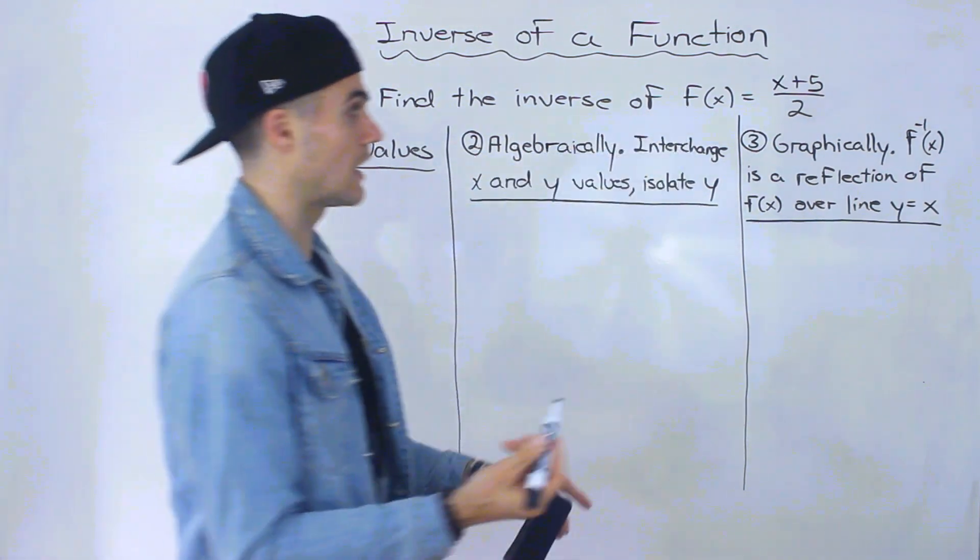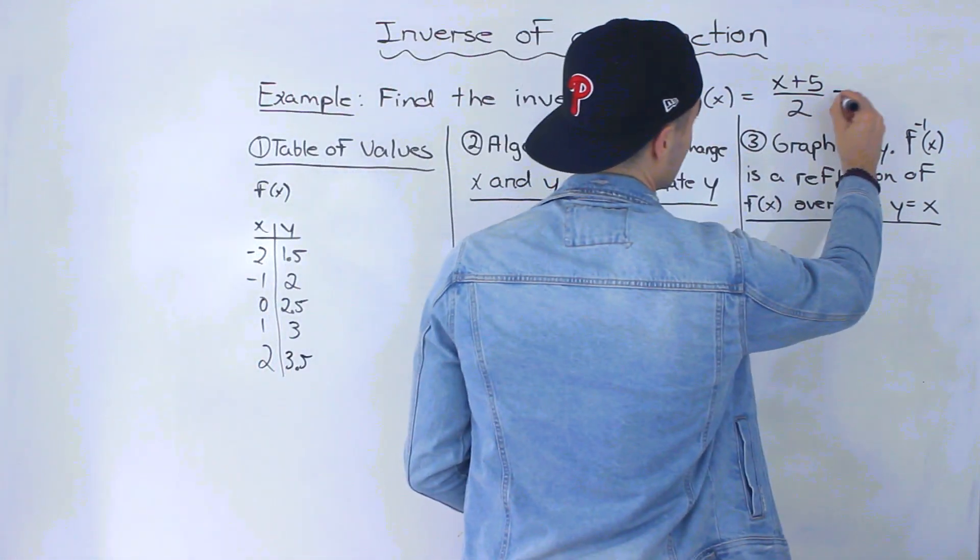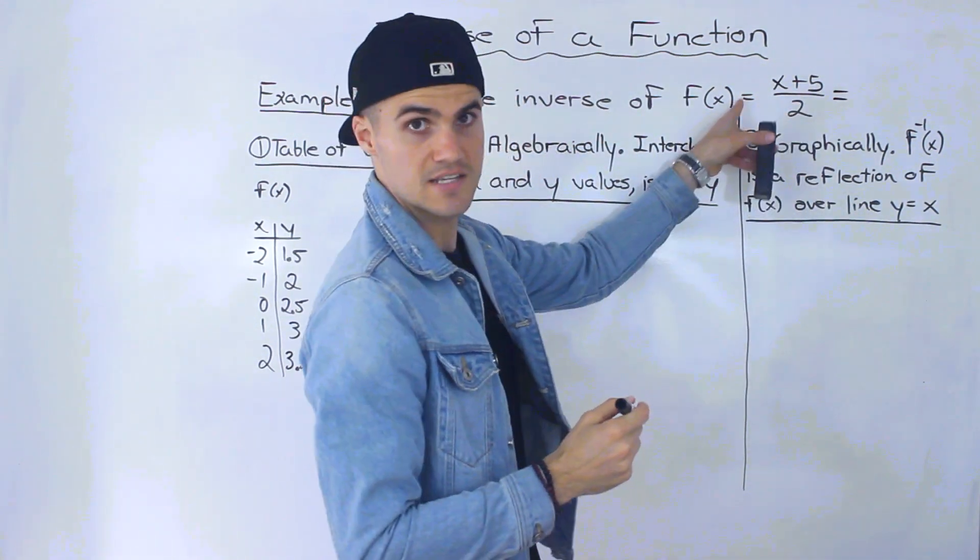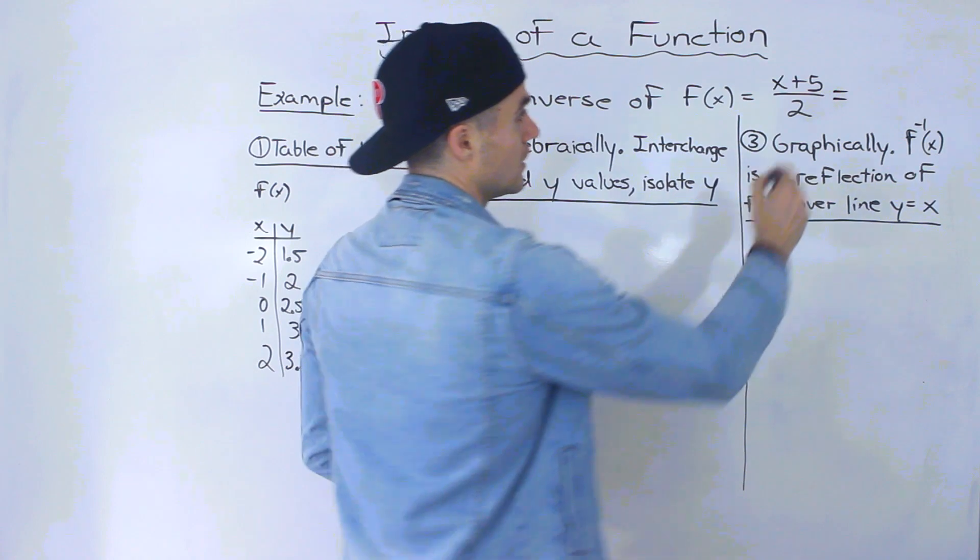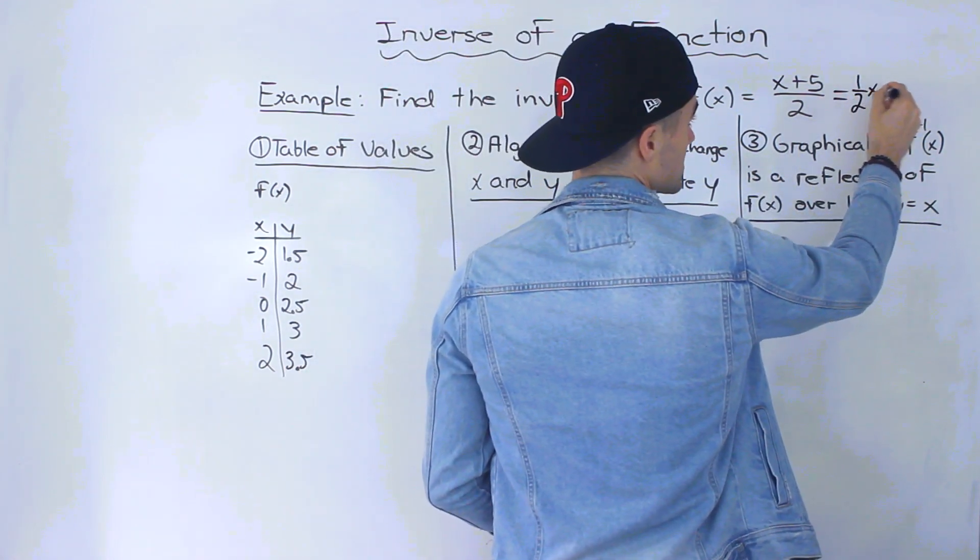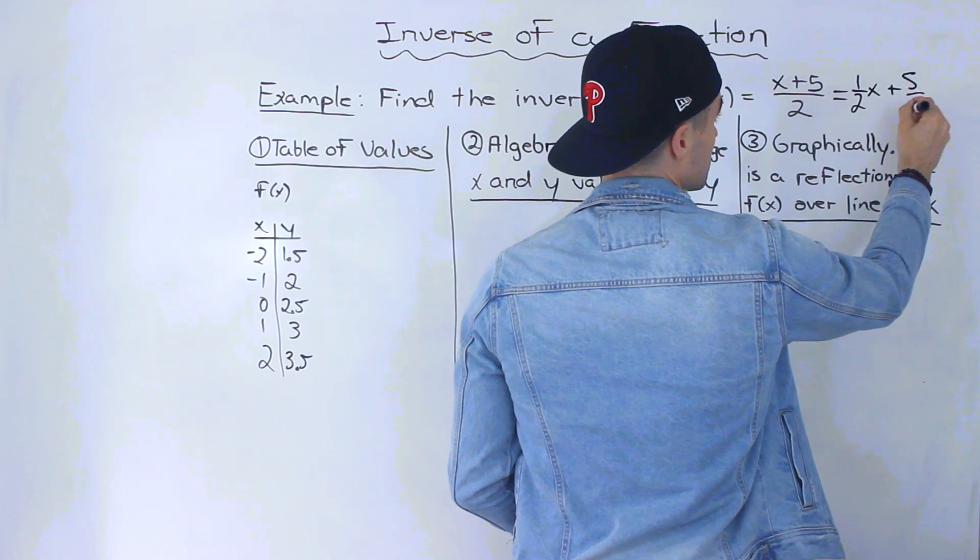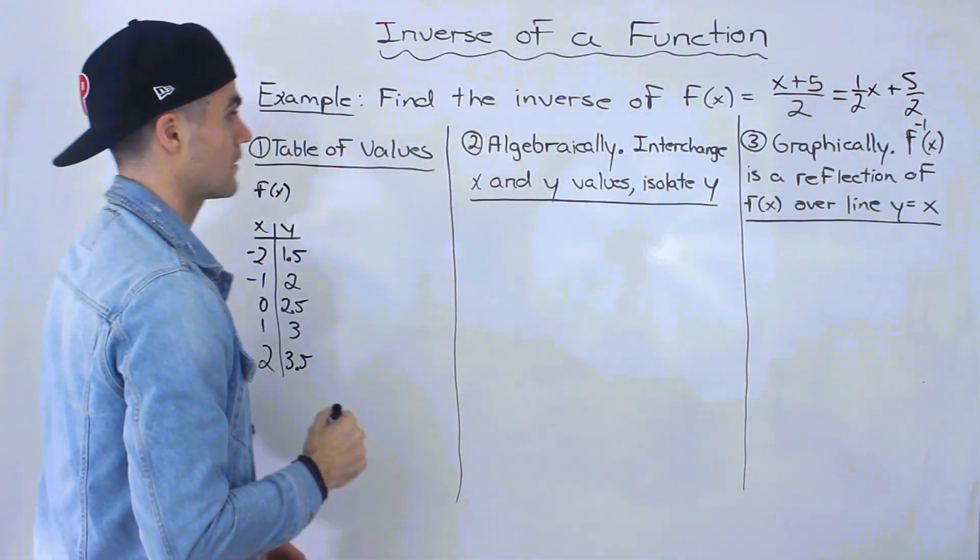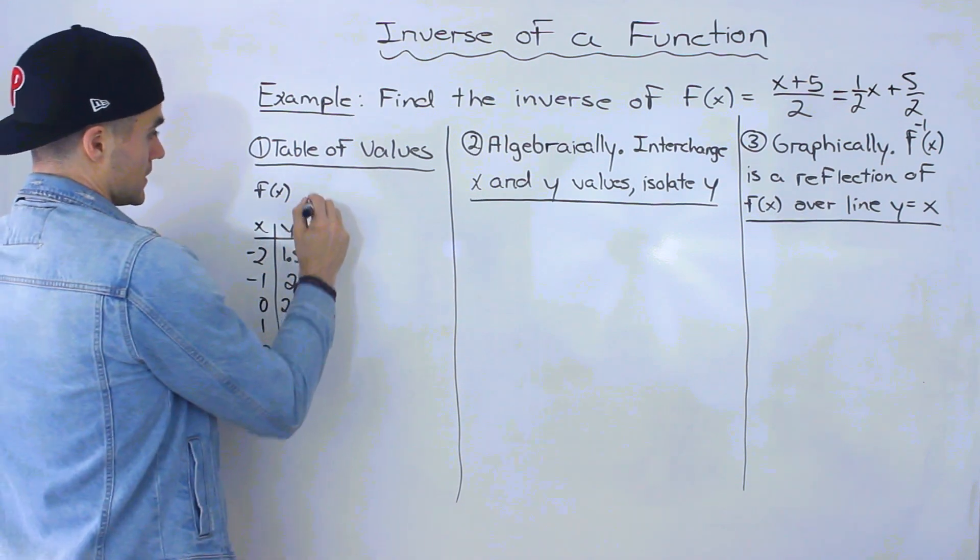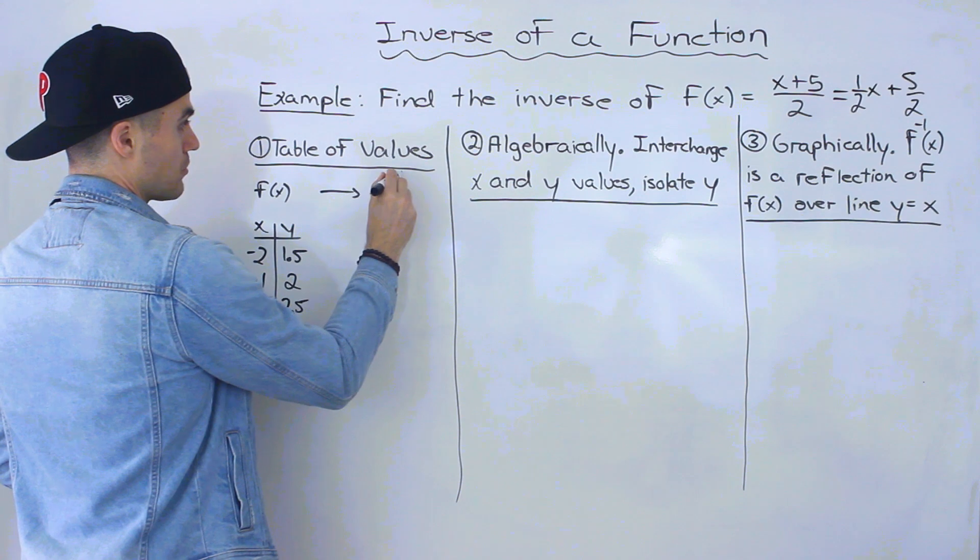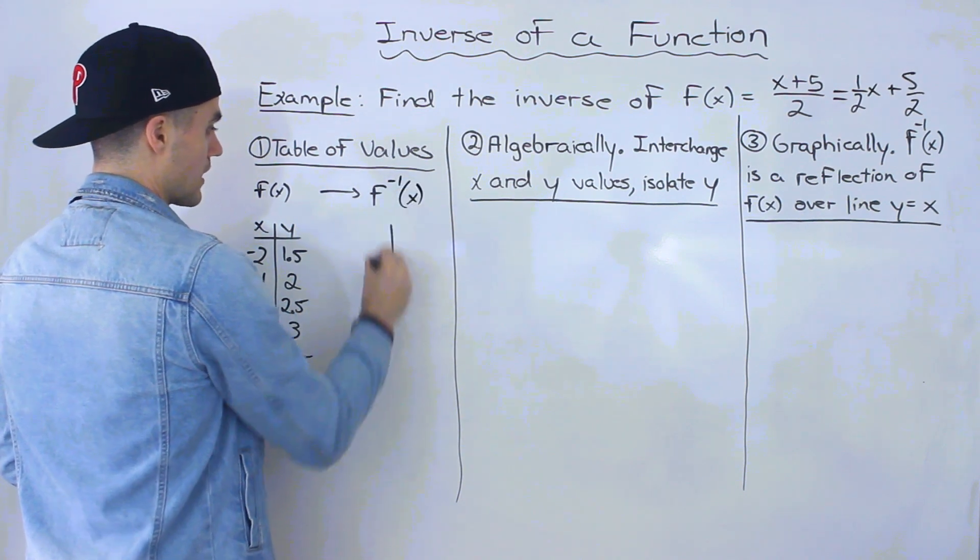By the way, notice that this here is a line. So it's in a bit of a weird format, x plus 5 over 2. But notice if we split this fraction up, we would have x over 2, which is the same as 1/2 x plus 5 over 2. So notice it's in y equals mx plus b form. So we got the table for the function.